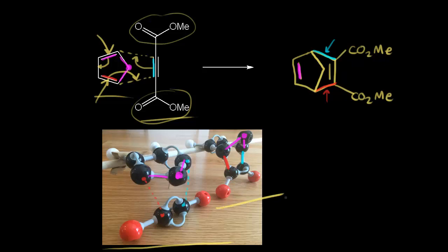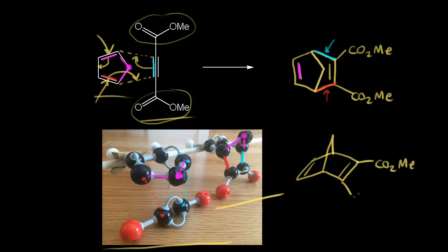We can sketch in our product from a different point of view. I'm going to redraw what we see in the picture — this is a form of drawing the product that you see a lot, so these take some practice. Let's draw in our double bonds, CO₂Me and CO₂Me. Our bridging CH₂ is right here — it went up in space.